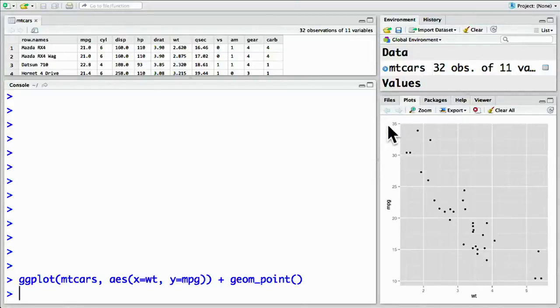Immediately, you can see a negative relationship. A higher weight means a lower miles per gallon, and therefore a lower fuel efficiency. This makes intuitive sense. A heavier car requires more fuel.